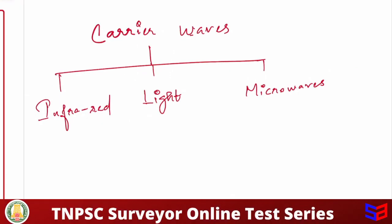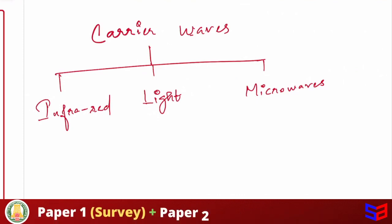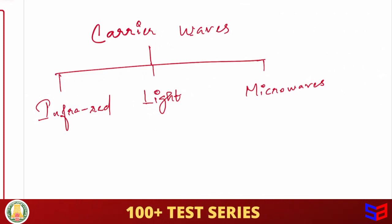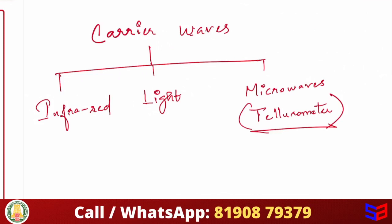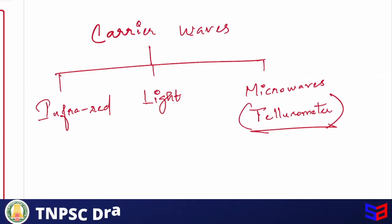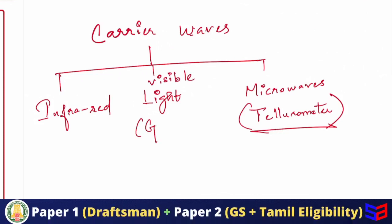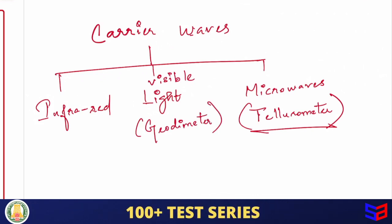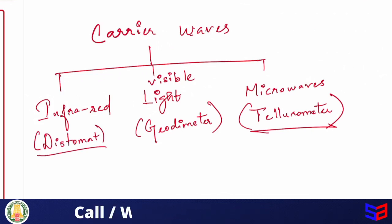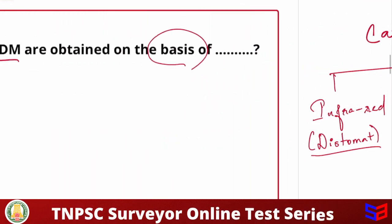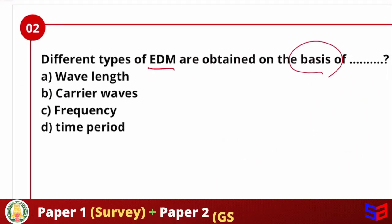So what wave is used, based on that we give different instrument names. For example, if microwave is used in EDM, that instrument is called tellurometer. Very important question. If light sources, visible light is used, we construct that instrument, it is called geodimeter. And for infrared, it is distometer. So tellurometer, this is a very important objective type question. So the question answer: different types of EDM is based on carrier waves.